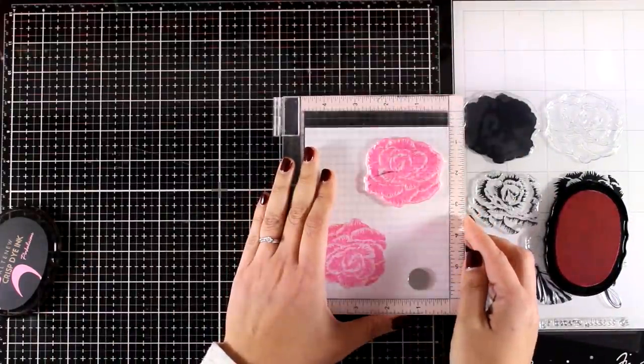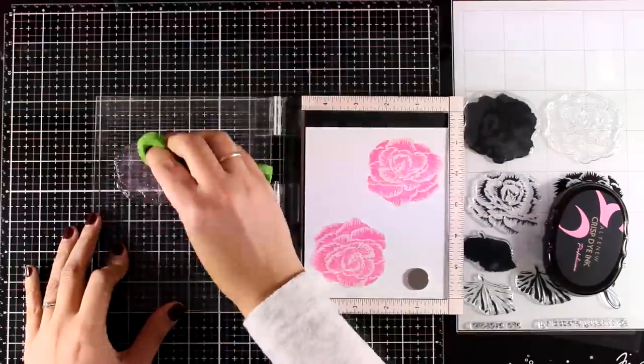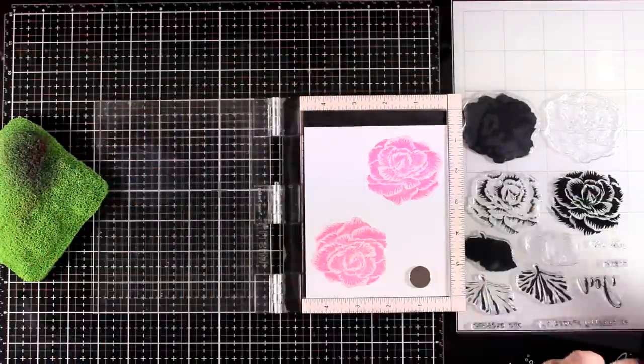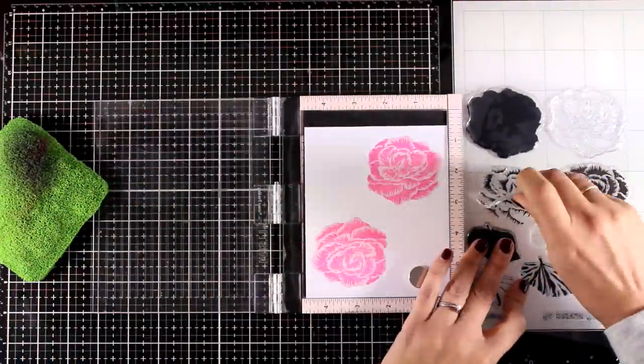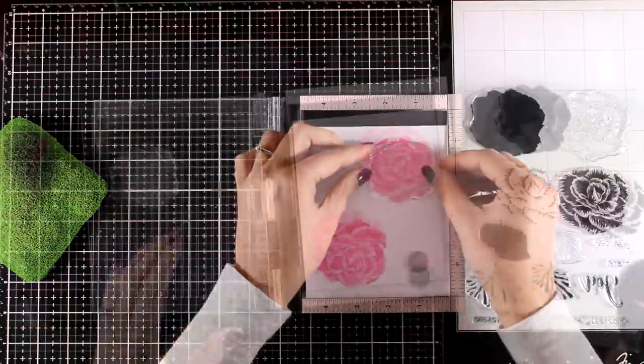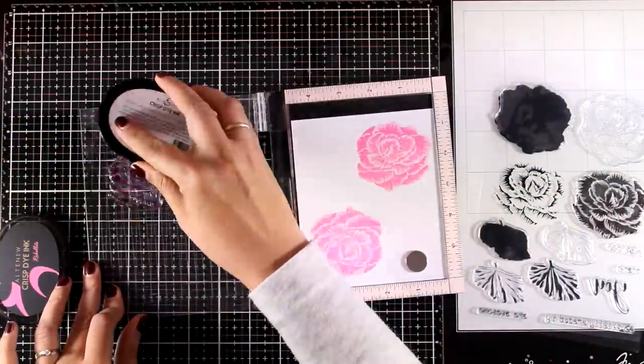And this is also very easy to align. Quite forgiving really. And finally I'm going to stamp with Rubellite. This is the darkest color.